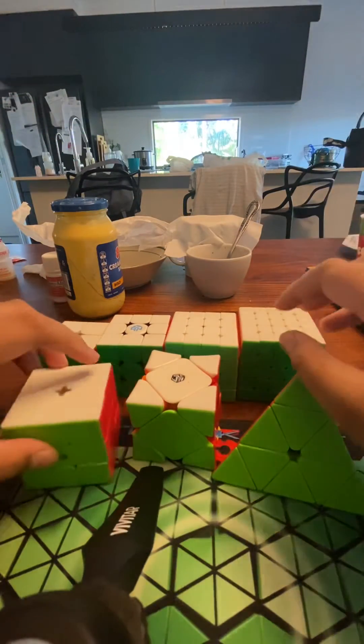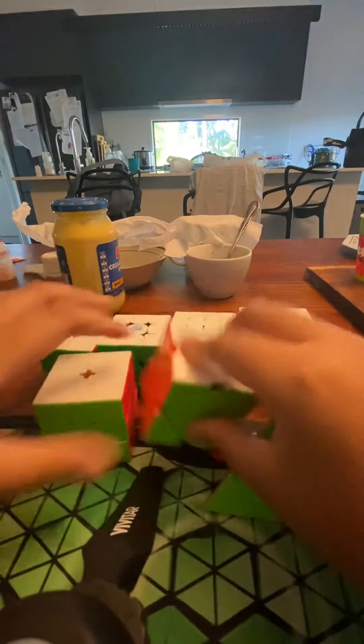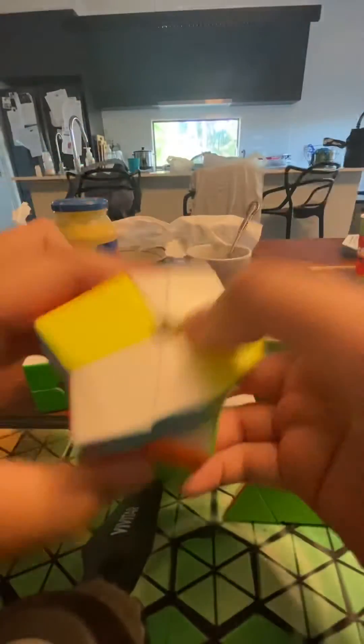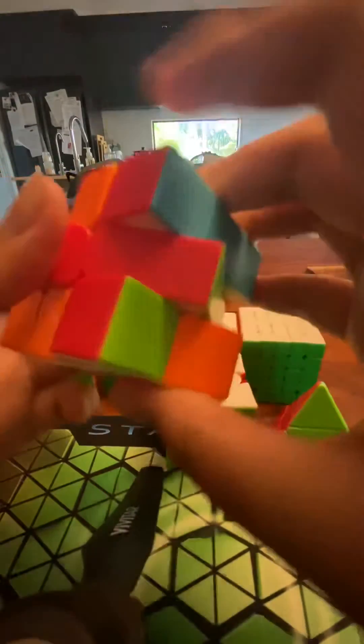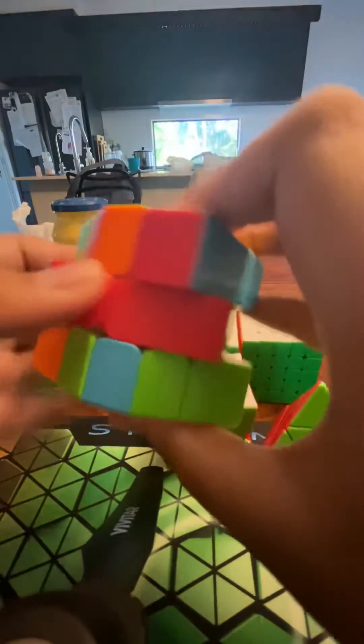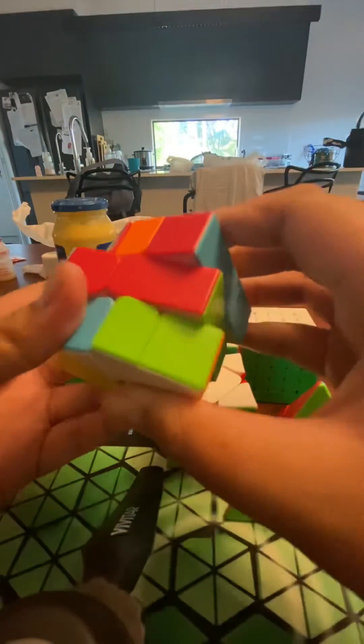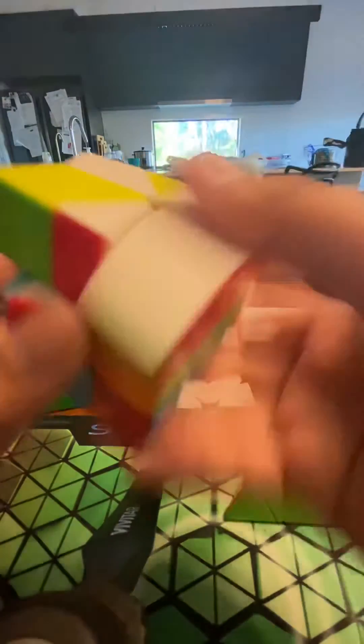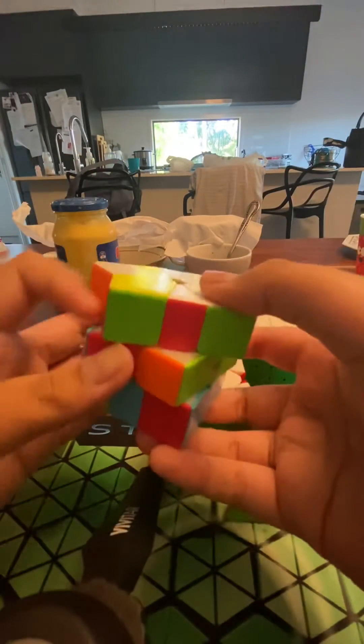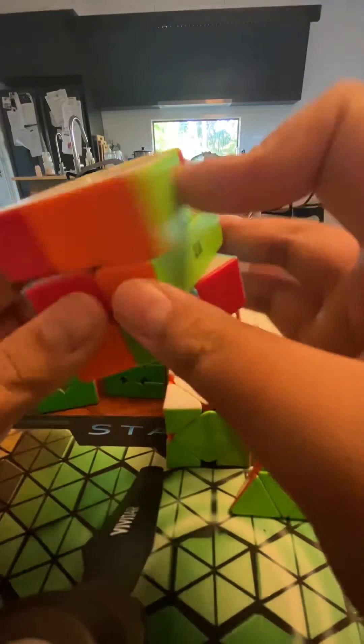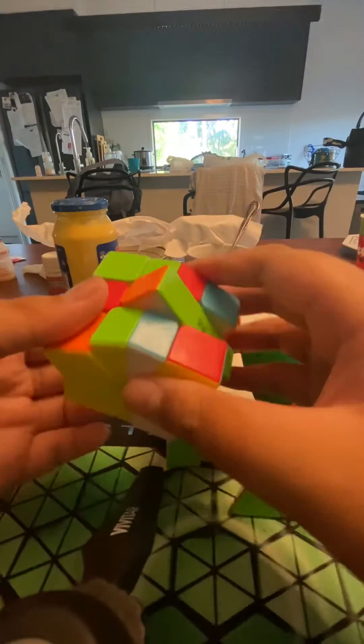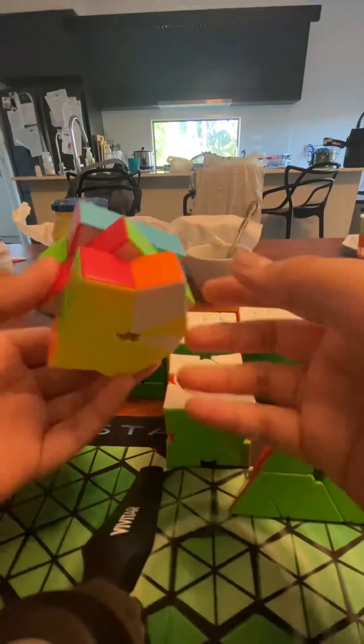But okay, the next event is Square-1. For Square-1 I'm hoping to just make it through time limit. I've forgot, yes I have forgotten some Square-1 algorithms.